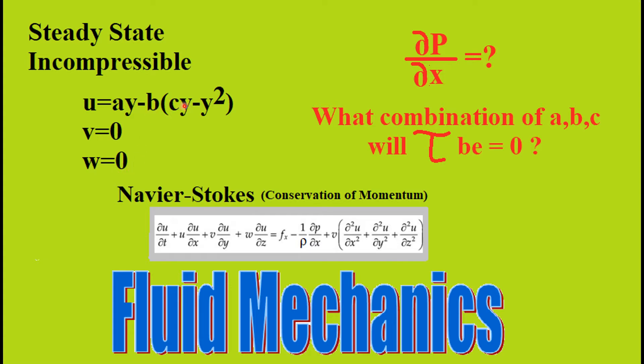A, B, and C are just some constants, and they want us to use the Navier-Stokes equation to determine an expression for the pressure gradient in the X direction. And the second question, they want us to determine for what combination of A, B, and C will the shear stress be equal to zero when Y is equal to zero and the velocity is equal to zero. All right, let's get started.